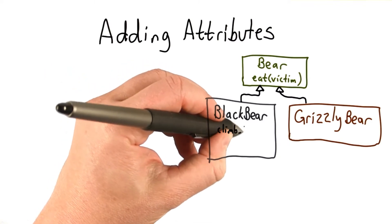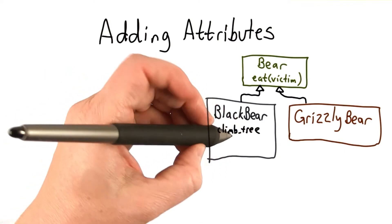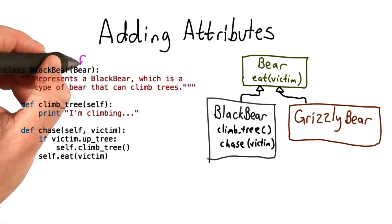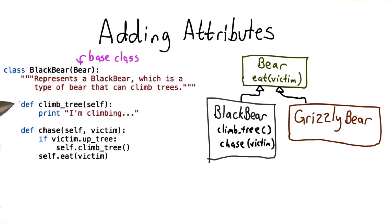We'll give the BlackBear a climbTree method and a chase method. Here's what the BlackBear code looks like. Its base class is Bear. It's got two additional methods defined: the climbTree method and the chase method.